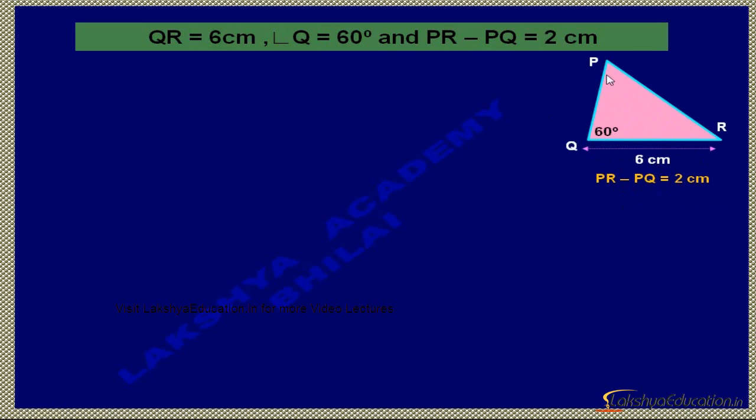Now, first we draw QR. Here at Q, draw a line and measure 6 cm from Q, and mark point R. That means QR is equal to 6 cm.